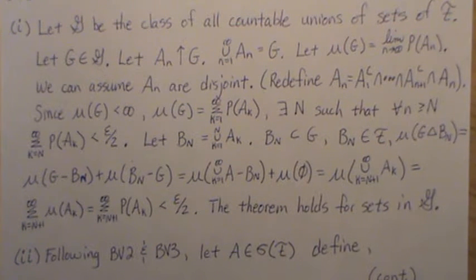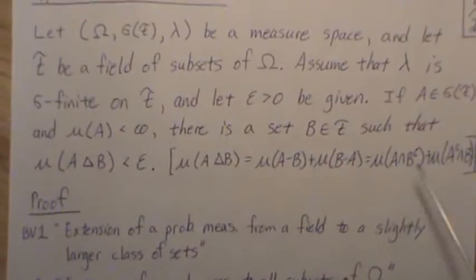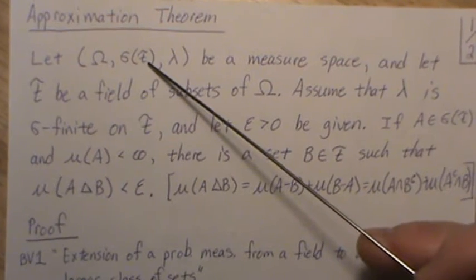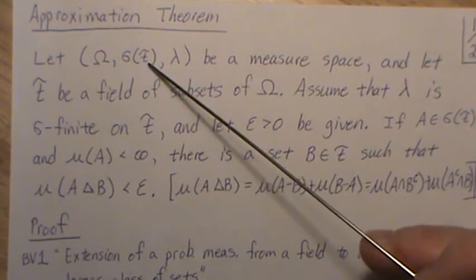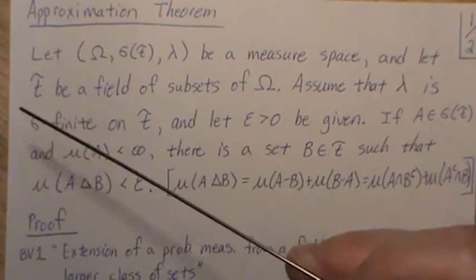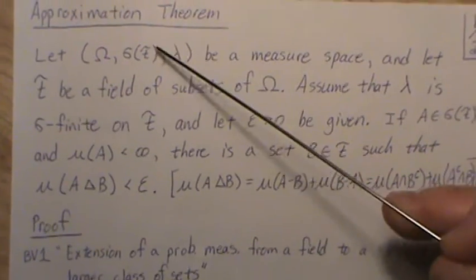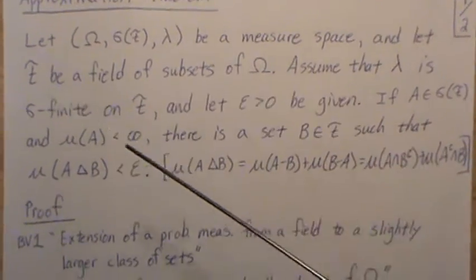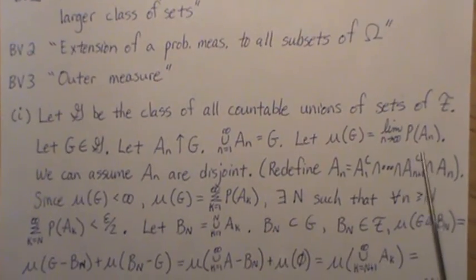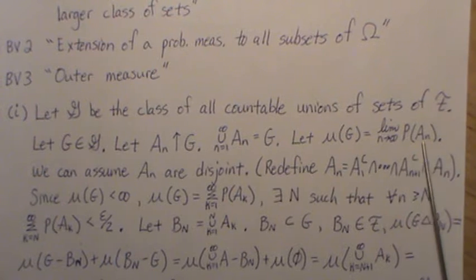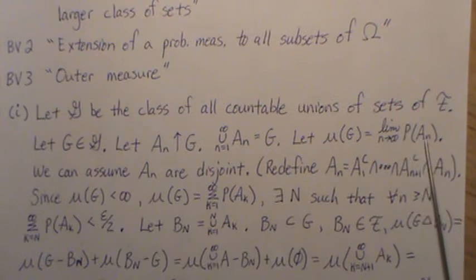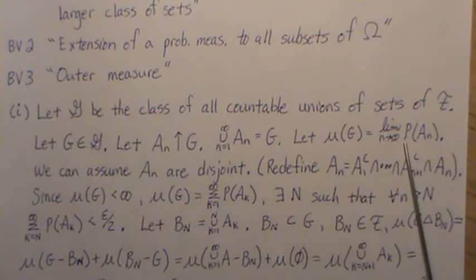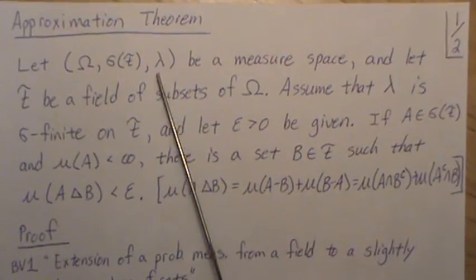Now, one thing to remember, we have a measure in the sigma field generated by a field. So every set in this field is in here, and this lambda works on those sets in F. So here's the subtle point. Even though I call it P(A_n), which is the measure of that set that belongs to the sigma field, that's really lambda.